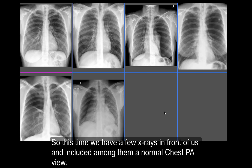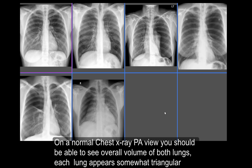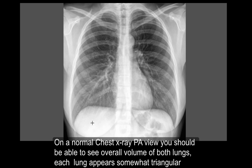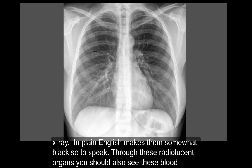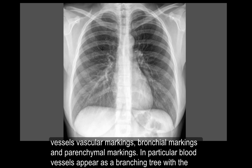We have a few X-rays in front of us, and included among them is a normal chest X-ray PA view. On a normal chest X-ray PA view, you should be able to see the overall volume of both lungs. Each lung appears as a somewhat triangular-shaped organ. Both lungs are filled with air, which gives them a radiolucent appearance — in plain English, makes them somewhat black. Through these radiolucent organs you can see blood vessels, vascular markings, bronchial markings, and peribronchial markings as well.